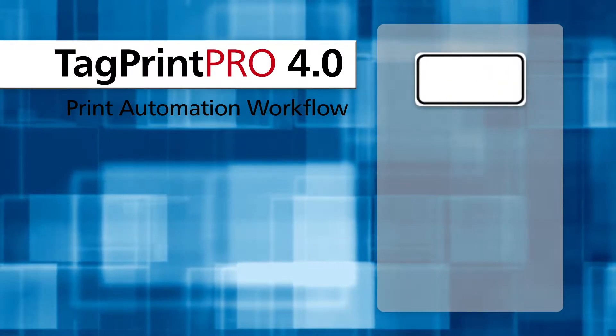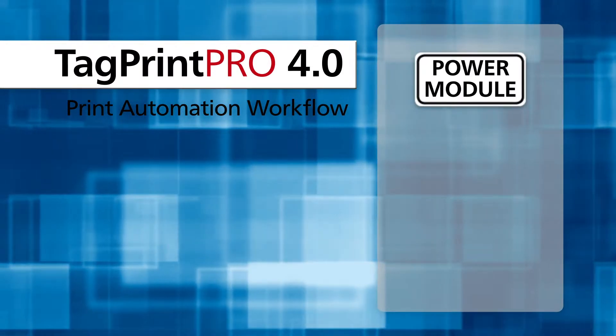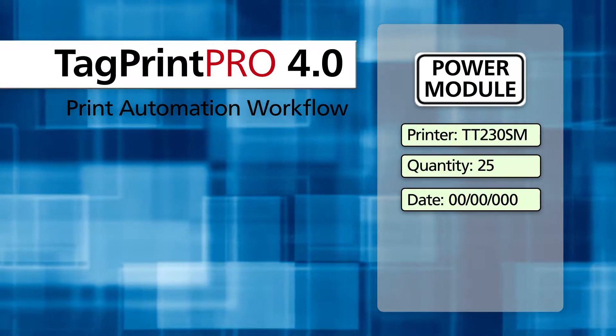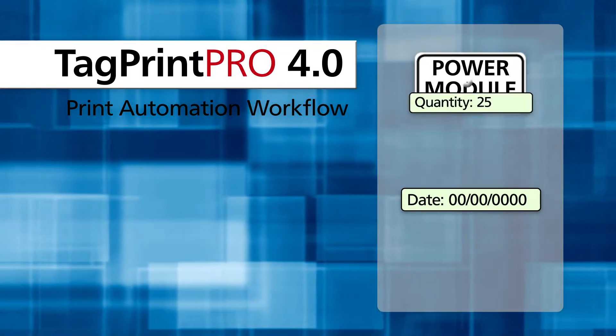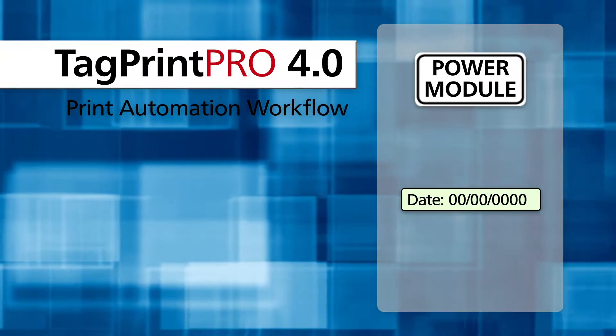Start with creating a label. When you save a label in TagPrint Pro, you can also add time-saving extras to the file, like what printer it goes to, and the print quantity. You can even add variable data, like a date code.